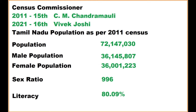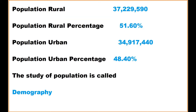The literacy rate was 80.09%. When we divide into rural and urban, the population in the rural area is 3 crore 72,29,590 and the percentage is 51.6%, whereas in the urban area it is around 3 crore 49,17,440.